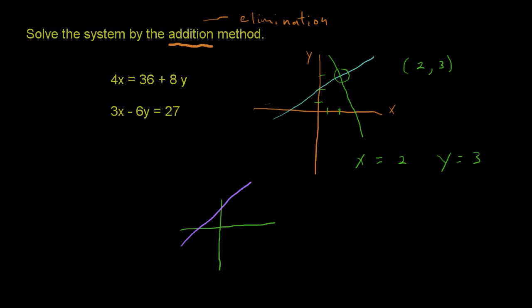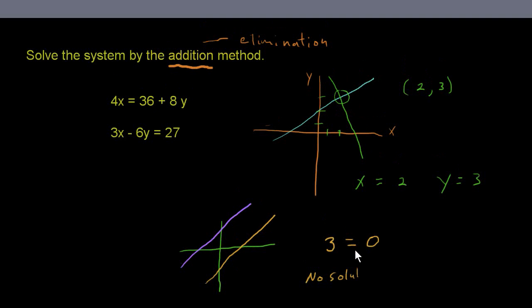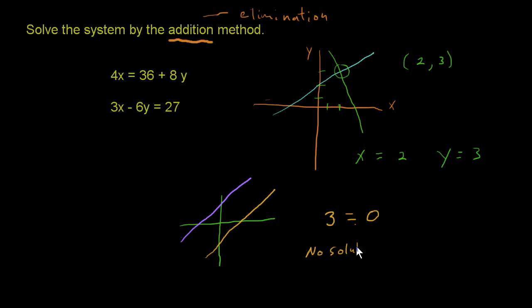A second possibility is that our two lines do not cross at all, that they're parallel to each other and never cross. Therefore, they wouldn't have a solution. When you do the elimination method, you're going to get something strange. The x and y's will be eliminated, and you end up with something like 3 equals 0, something that's not true. If that happens, then we have the case where there is no solution, and it would be the case where the two lines are parallel to each other.